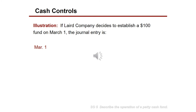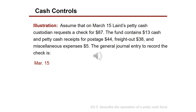Let's look at an example of how a petty cash fund is recorded. Laird Company decides to establish a $100 fund on March 1st. The journal entry for establishing the fund is to debit Petty Cash for $100 and credit Cash for $100. Assuming the petty cash custodian later requests a check for $87 — the fund contains $13 cash plus receipts for postage of $44, freight-out of $38, and miscellaneous expenses of $5 — the journal entry debits Postage Expense $44, Freight-Out $38, Miscellaneous Expense $5, and credits Cash $87.